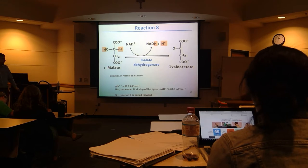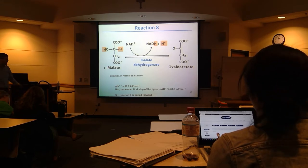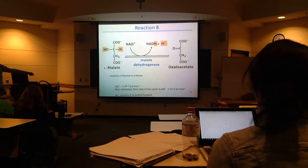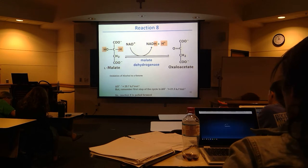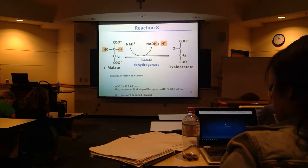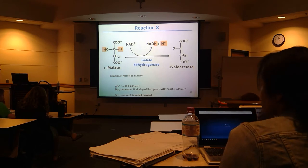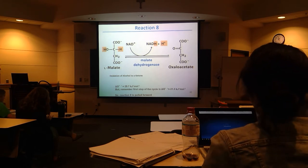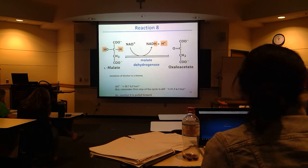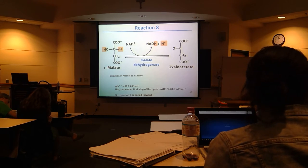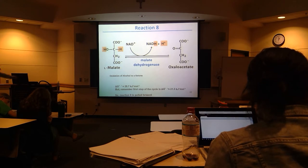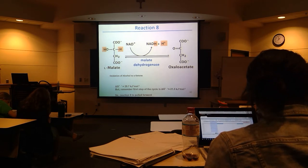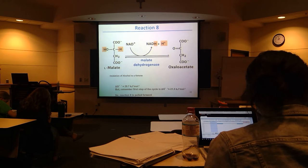This one is very, very non-spontaneous — the standard free energy change is really high. But the very first step of the cycle is super negative, so just a little bit of oxaloacetate that gets formed will cause these levels to be pretty low usually. That drives the first step of the cycle to pull this reaction forward to make more oxaloacetate. This reaction is pulled forward by the very first step of the citric acid cycle.